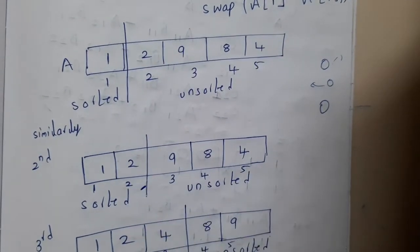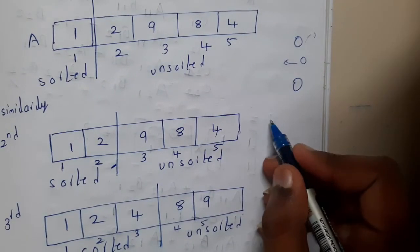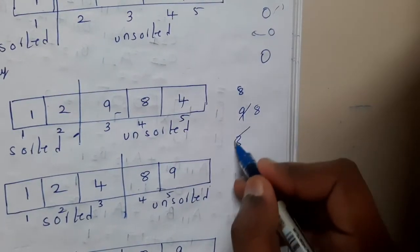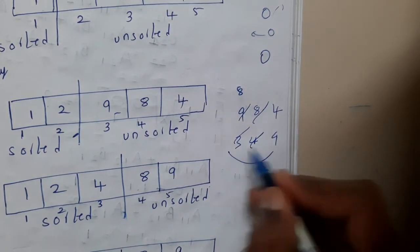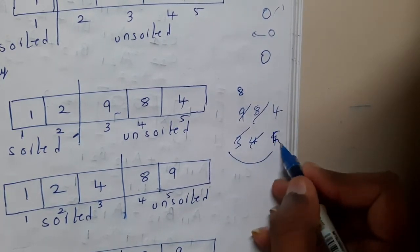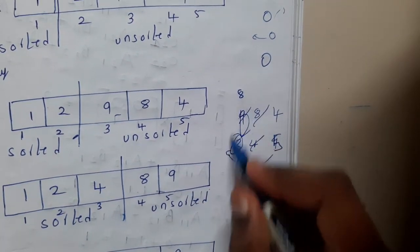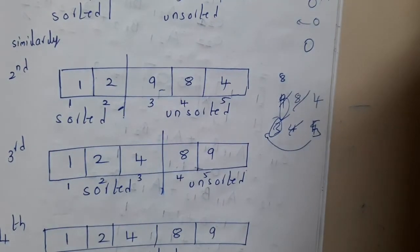For the third pass, initially you assume 9 as the minimum at position 3. Comparing with 8 and 4, minimum becomes 4. You swap 4 with the element at position 3, which is 9. In the fourth pass, the remaining elements are sorted. This is how selection sort works.